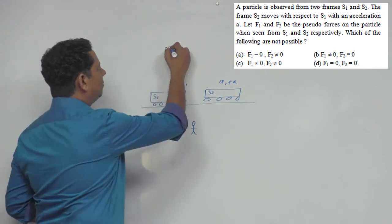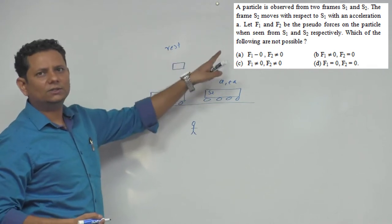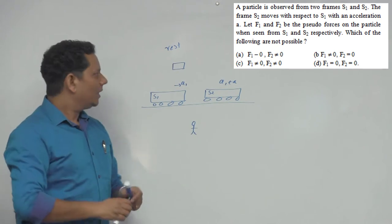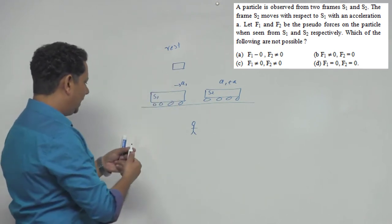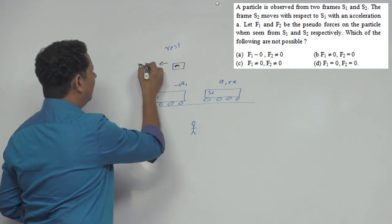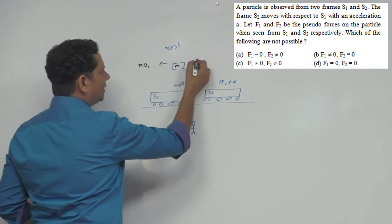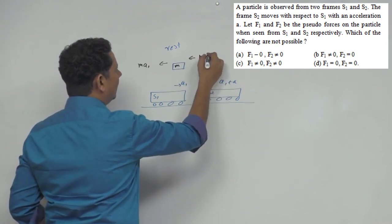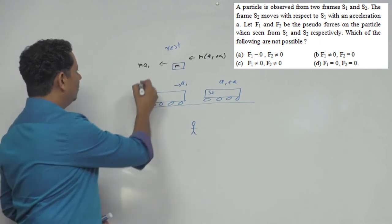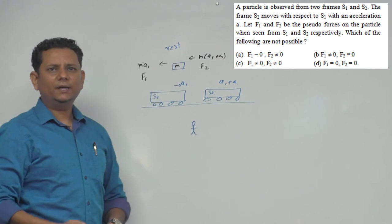Now when we observe from S1, let's consider the particle is at rest — it doesn't matter, even if you take constant velocity or different acceleration, the result will be the same. From S1, the pseudo force on the particle will be m·a1 in the backward direction. From S2, the pseudo force will be m·(a1+a). So f1 = m·a1 and f2 = m·(a1+a).